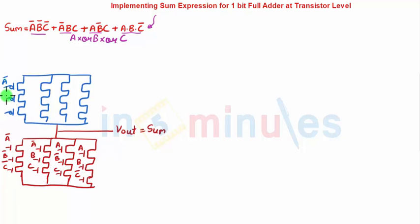Here, PMOS is A bar B bar C bar and so on and so forth: A bar B C, A B bar C, A B C bar.